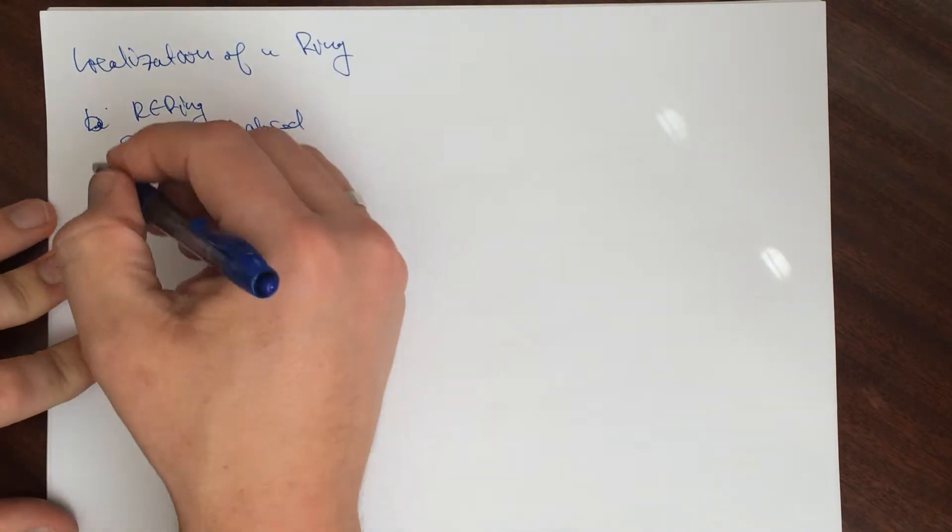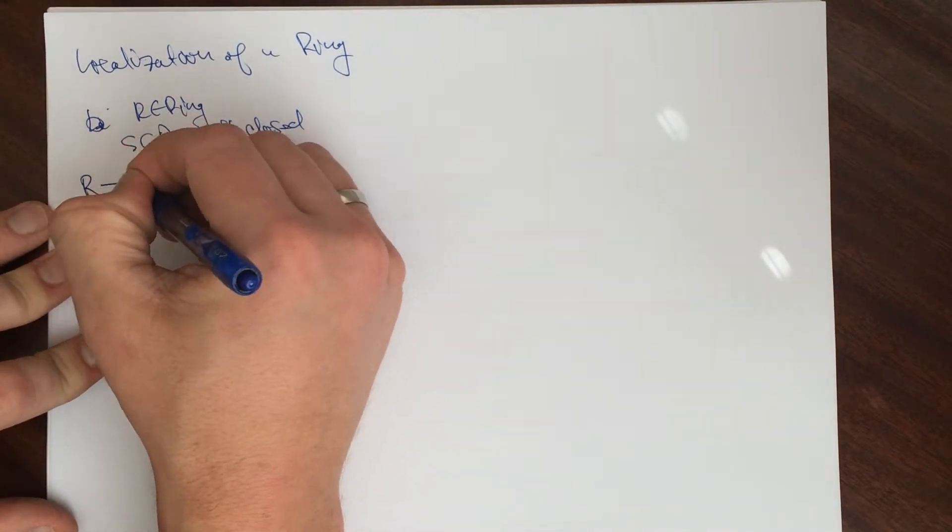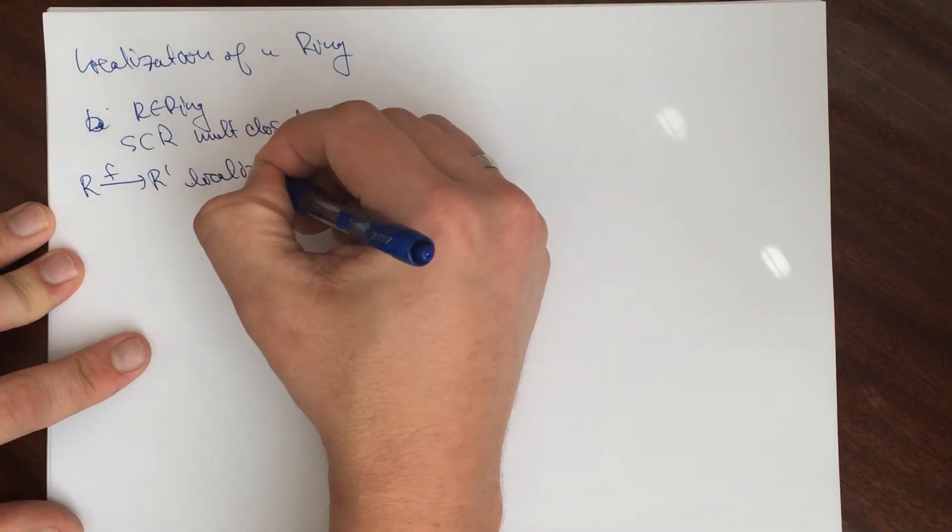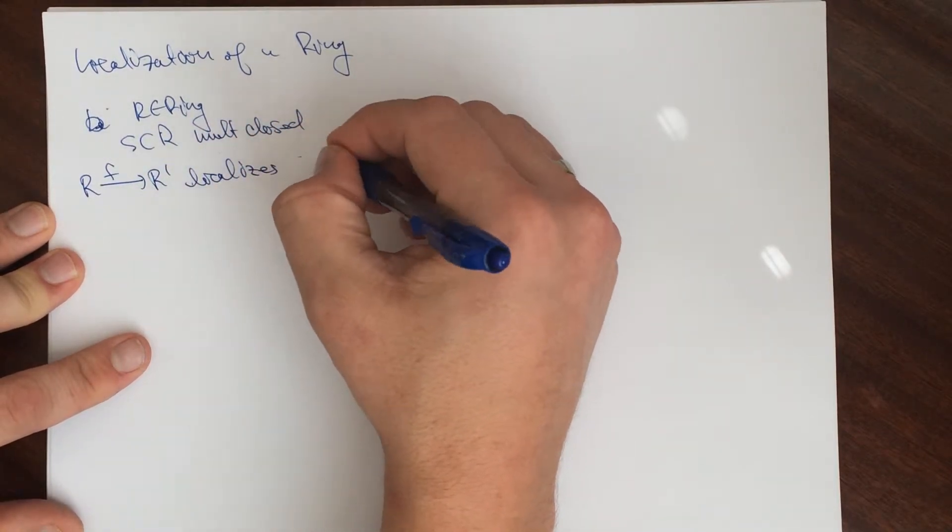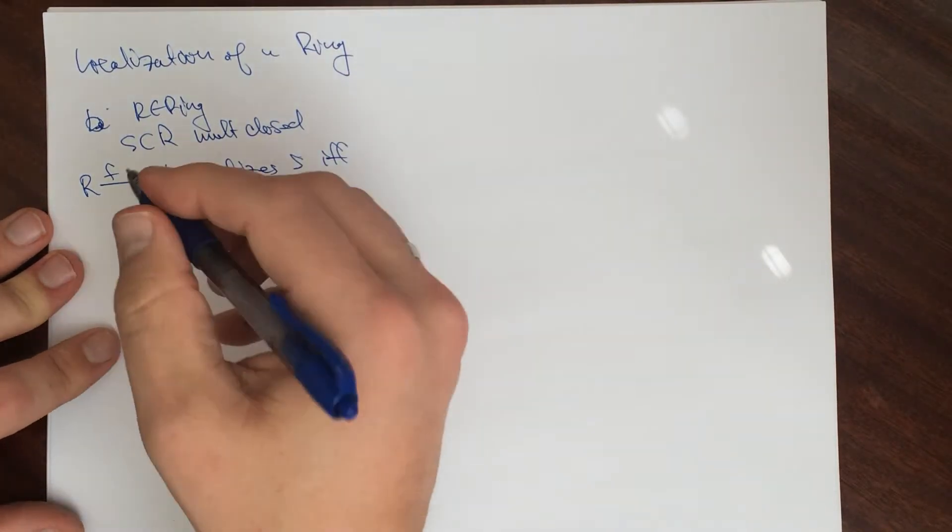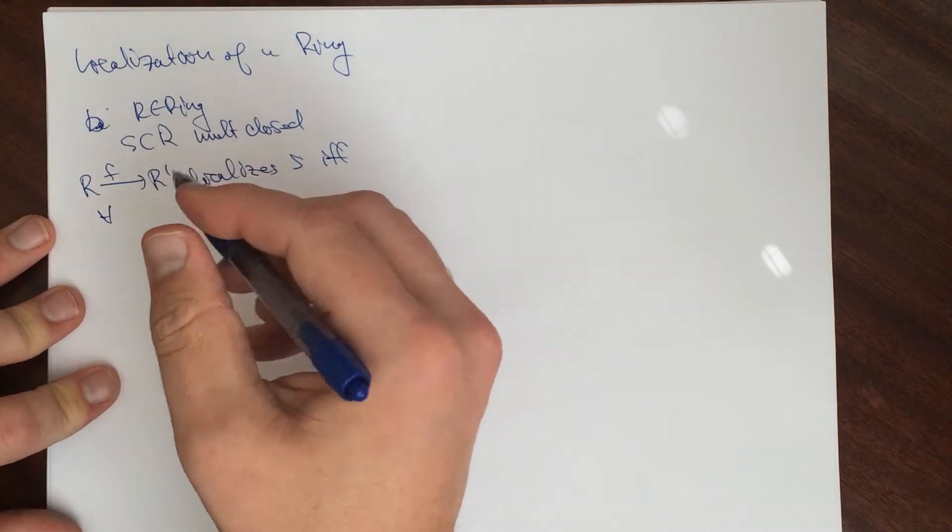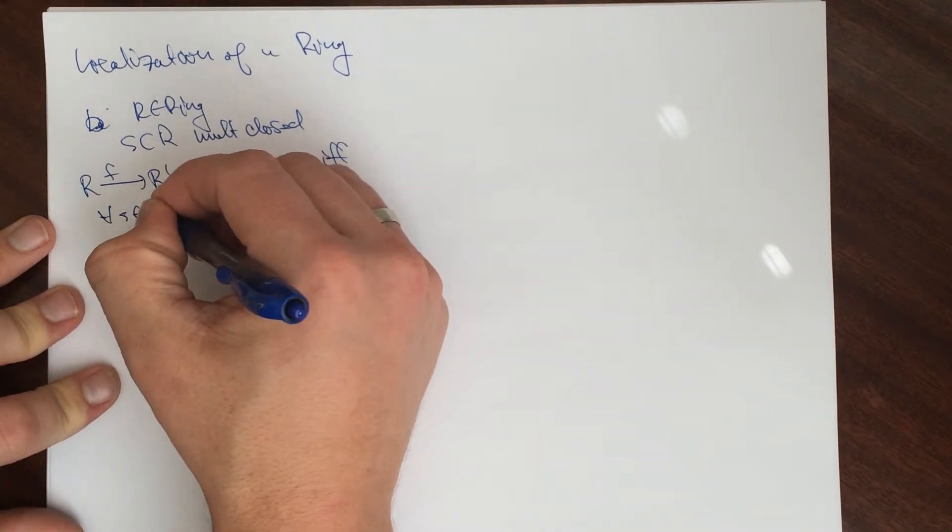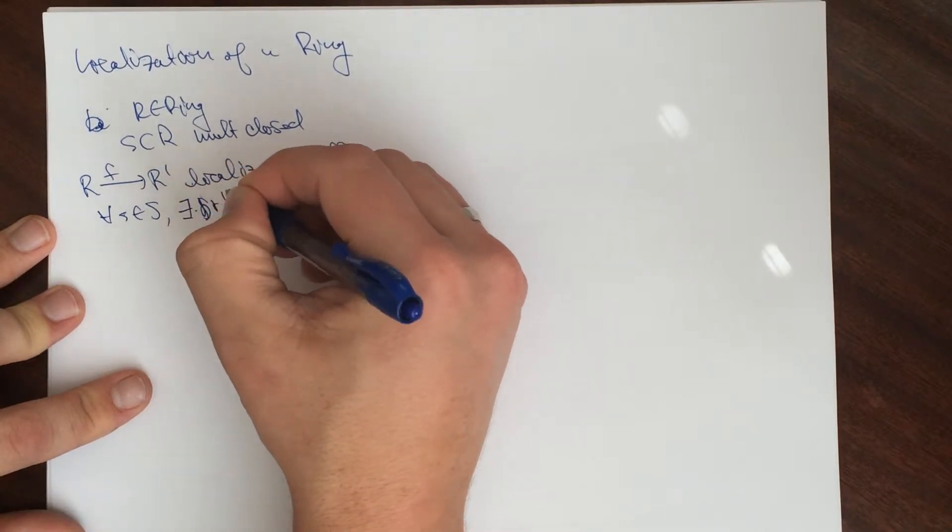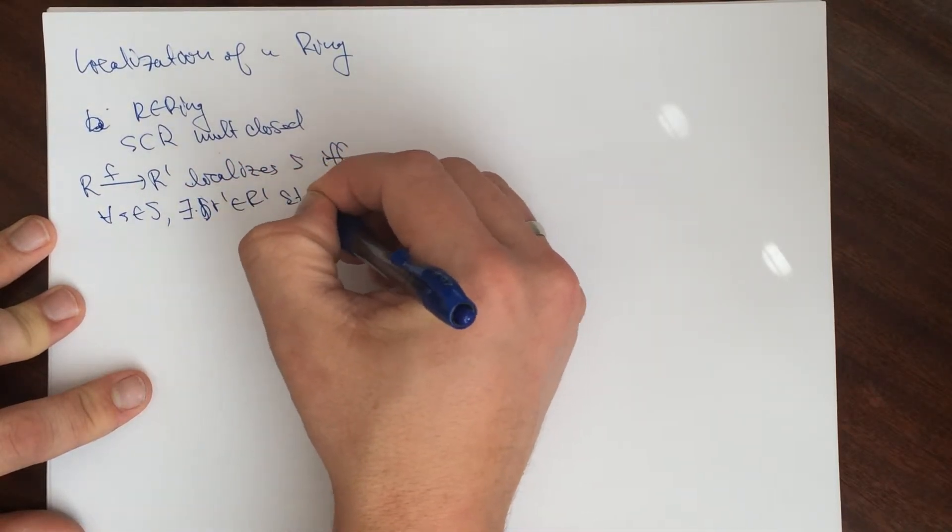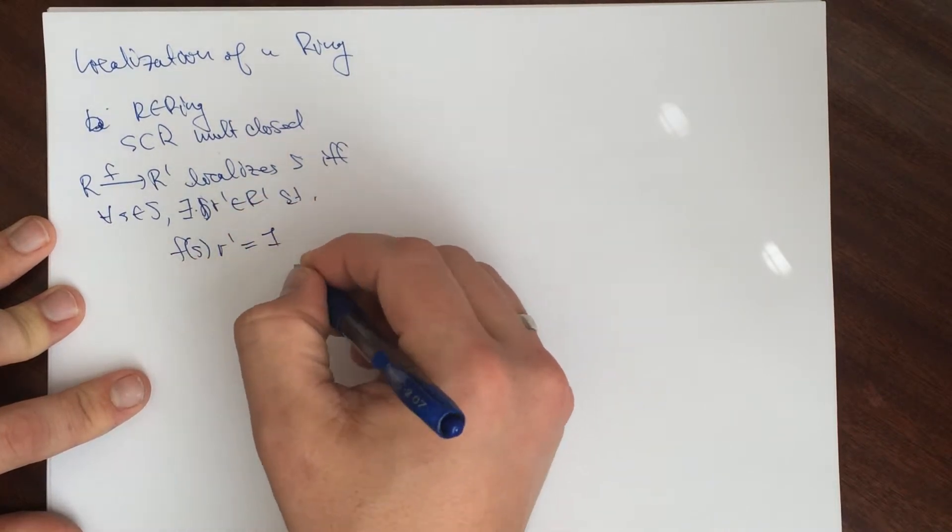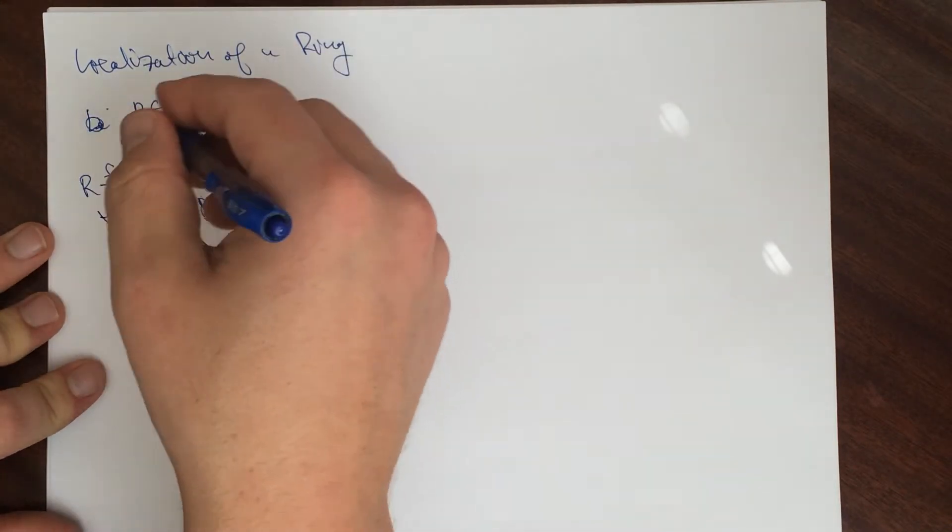We're going to say that a map here of rings localizes S if for all S in S, there exists an R' such that F of S in R' is equal to 1. So we can do this.